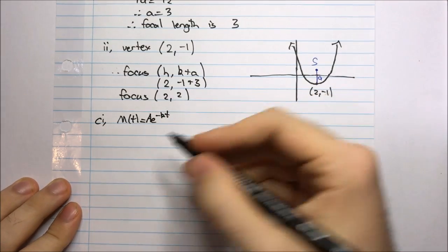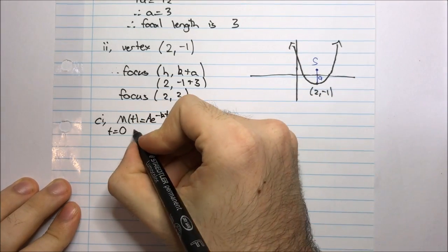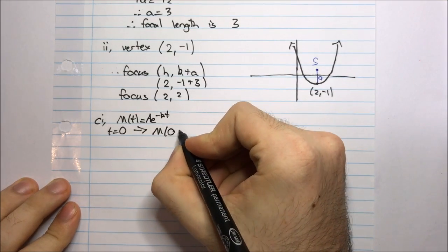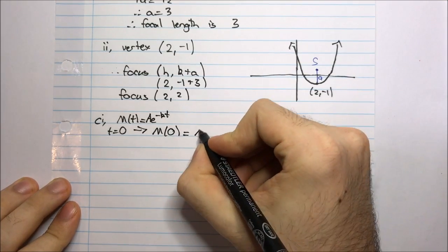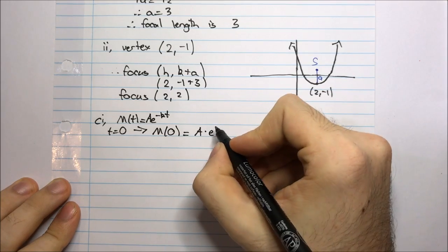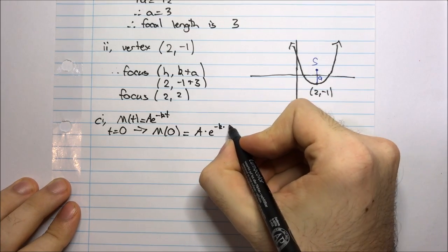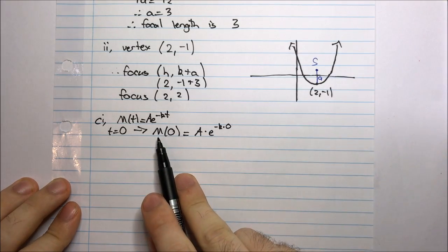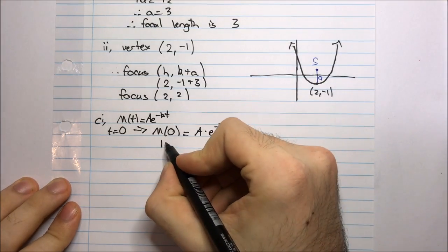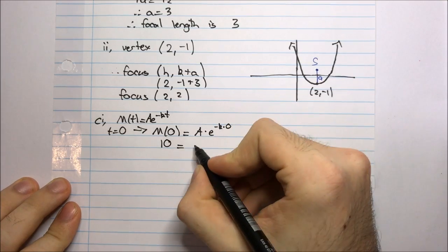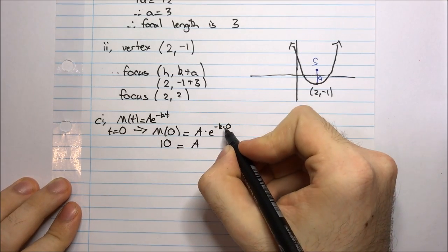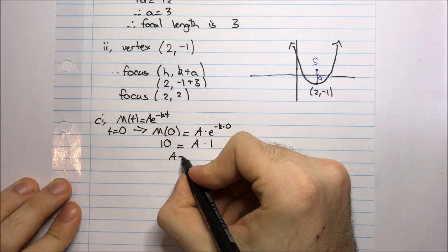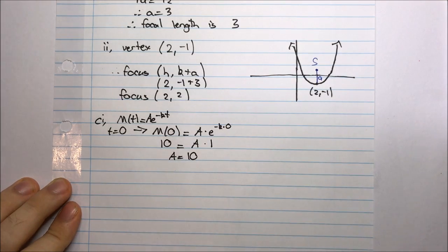At initial time, when t equals 0, m(0) should equal a times e to the power negative k times 0. We're told that initially the value is 10mg. So we have a times e to the power 0 — but e to the power 0 is 1, so I have a times 1. Therefore a is equal to 10.